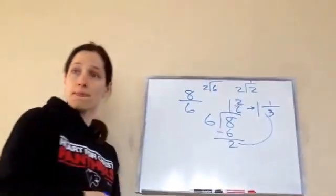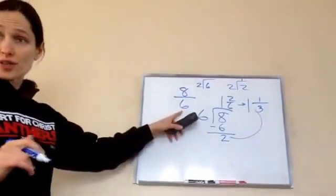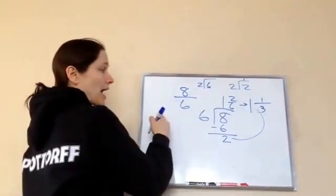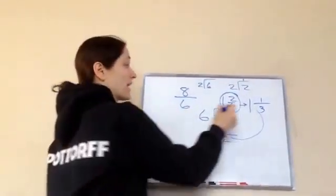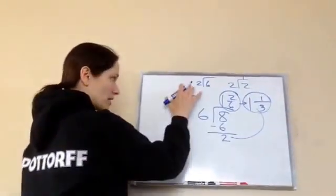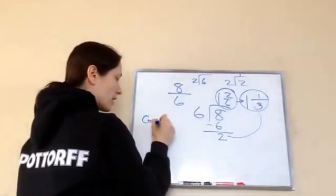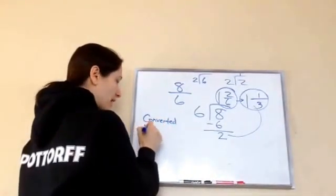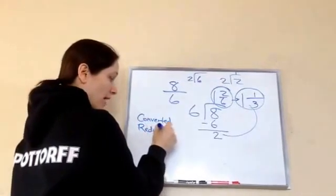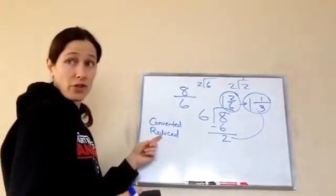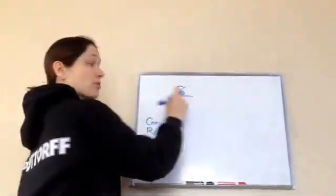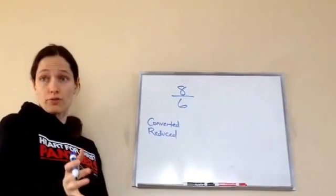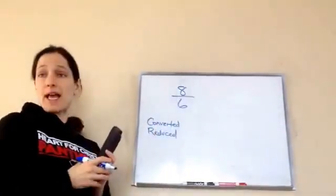You get that? So that's what you're learning how to do today. Now I took this 8 sixths and I converted it into a mixed number. Then I reduced it. So I took this number and converted it first, and then I reduced it. But did you know what? You could reduce it first and then convert it. Watch. I'm going to reduce these two numbers to start off with. So what number will go both into 8 and 6?